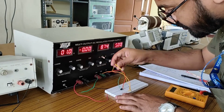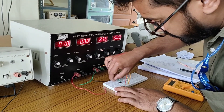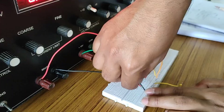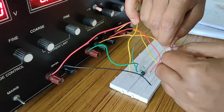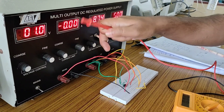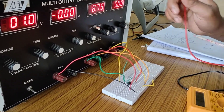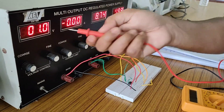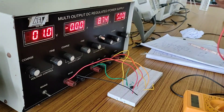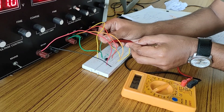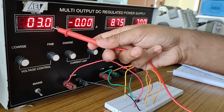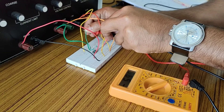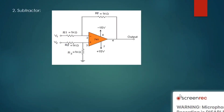Here we are preparing our adder circuit using the circuit diagram from the previous slide. Now we check whether the circuit works. We apply one volt as the first input and five volts as the second input. Since this is an adder, five plus one should give six volts. It gives approximately six volts — 5.9 volts. For the second reading, we apply three volts and three volts; the output is exactly six volts. Our adder circuit is complete.